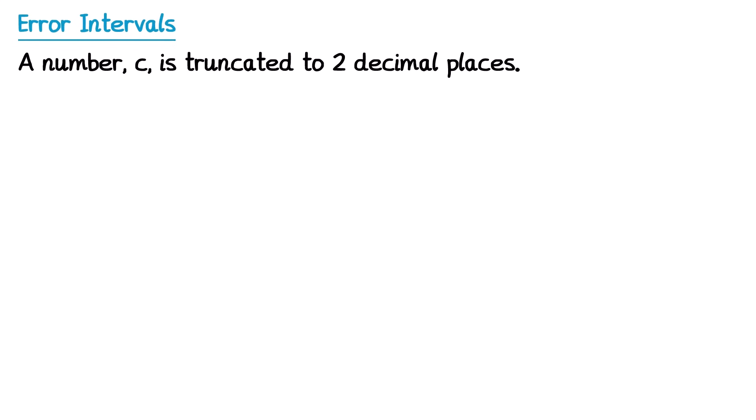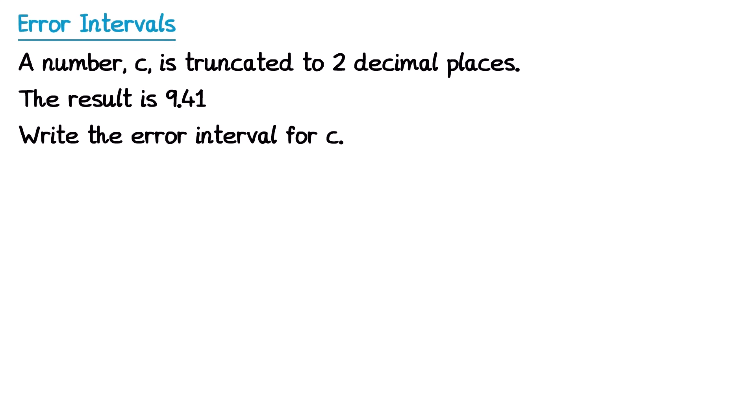Let's have a look at a second example of truncating — this time to two decimal places and the result is 9.41, and we need to write the error interval for c. Since it's been truncated to two decimal places, the number must be in between 9.41 and 9.42. Because people are much more familiar with rounding, they sometimes find truncating difficult at first. But once you practice, truncating is actually probably easier — you just write down the number you're given and the one that's one place above it.